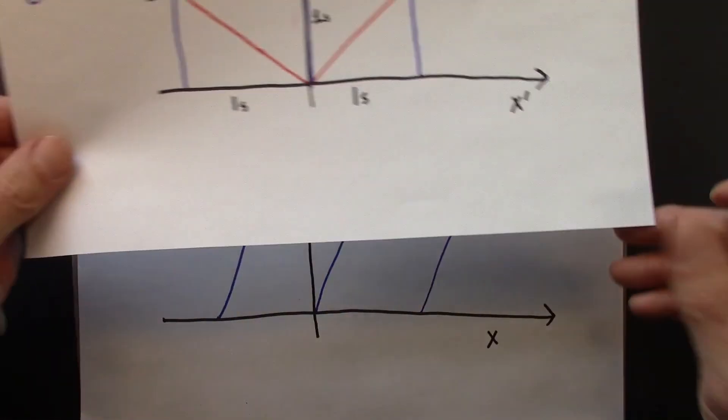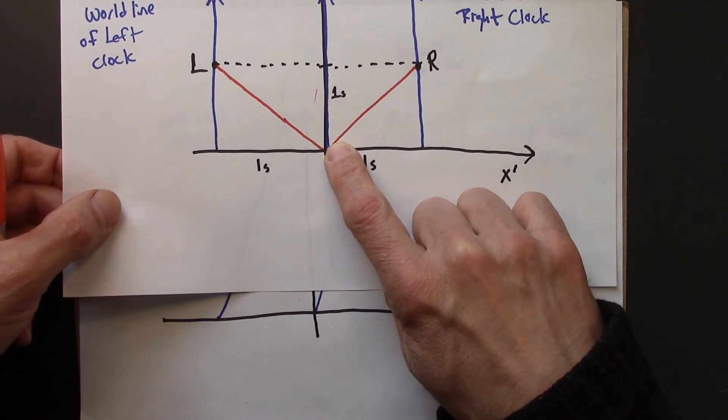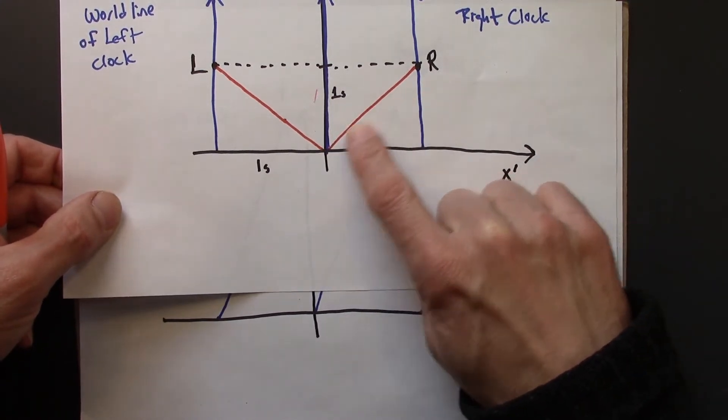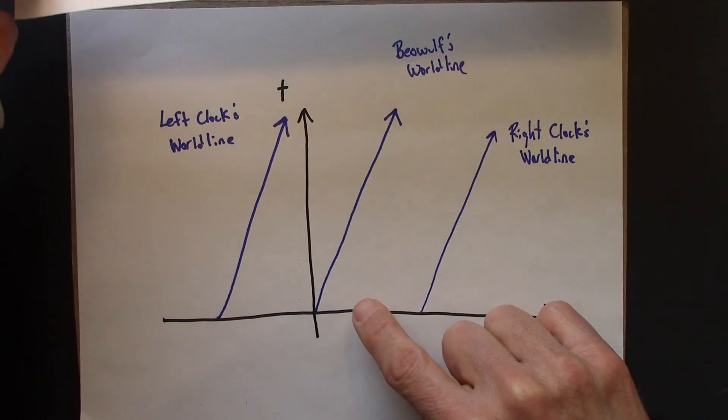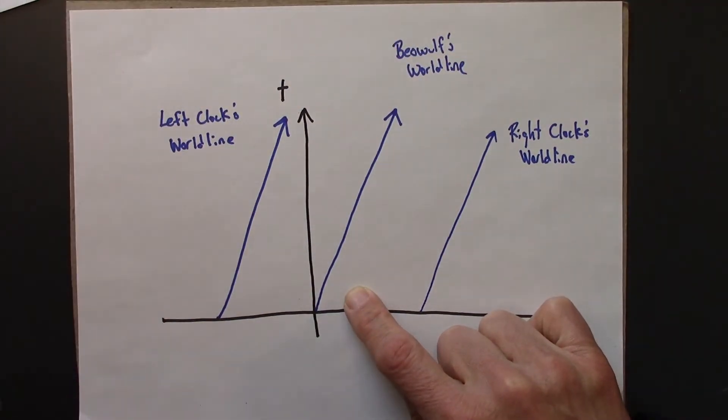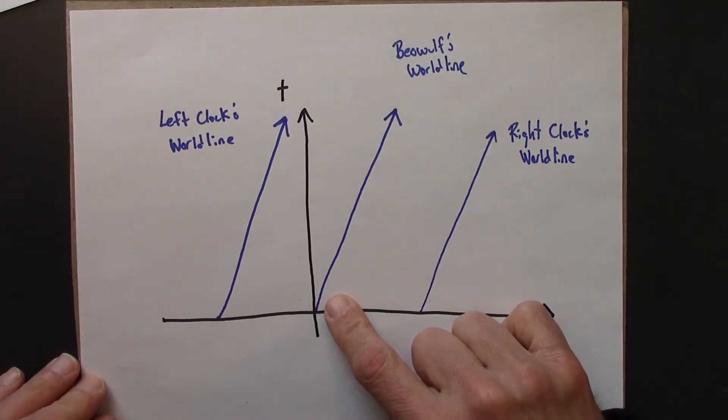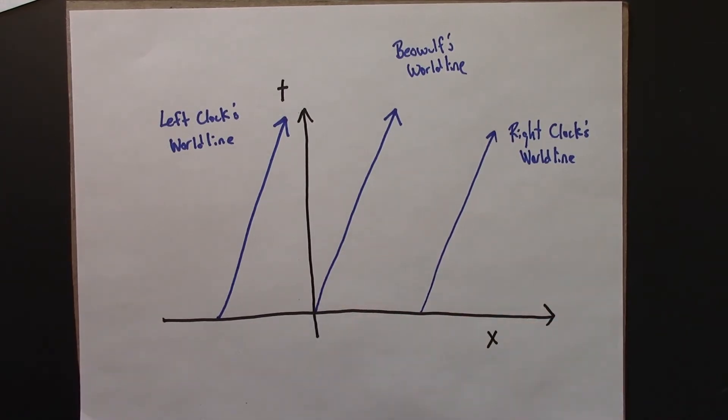You might think, well, this light beam left Beowulf, and Beowulf was already moving to the right at a certain speed. So Anastasia would see the light flash going even faster. But as Einstein is telling us, that's actually not how light works. In every reference frame, we observe the speed of light to be the speed of light.